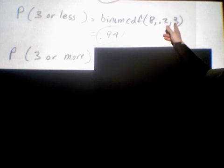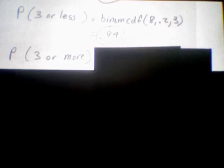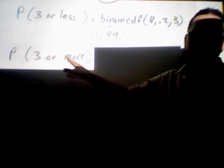Now to figure out some other set situations such as the probability of three or more speeders among the eight, you can again use the commands on the calculator. If you want three or more, the CDF command figures out that many and less. There's not a command that does so many and more. What you'd have to do is use the idea of complements.